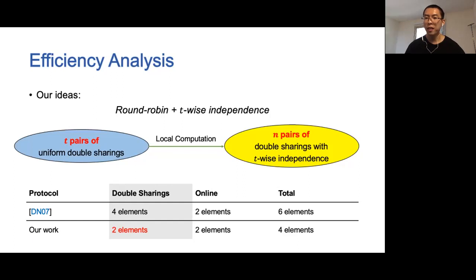Our work reduces the number of random double sharings needed. Specifically, we only need t pairs of random double sharings to evaluate n multiplication gates. Therefore, we reduce the cost per pair of double sharings by a factor of two, that is, two elements per party. The total communication complexity of our protocol becomes four elements per multiplication gate per party.